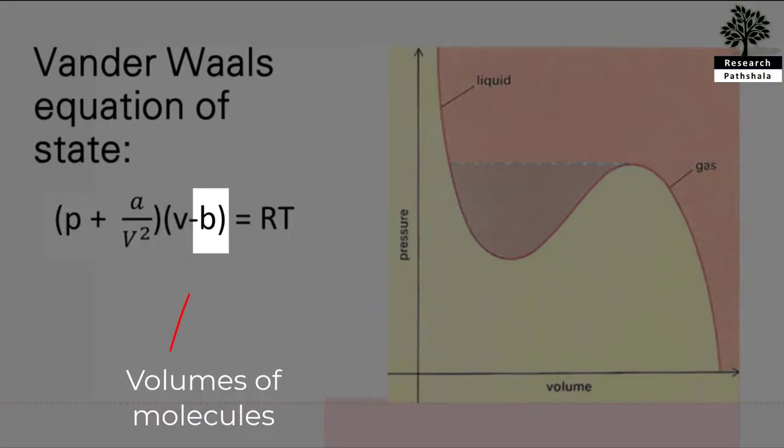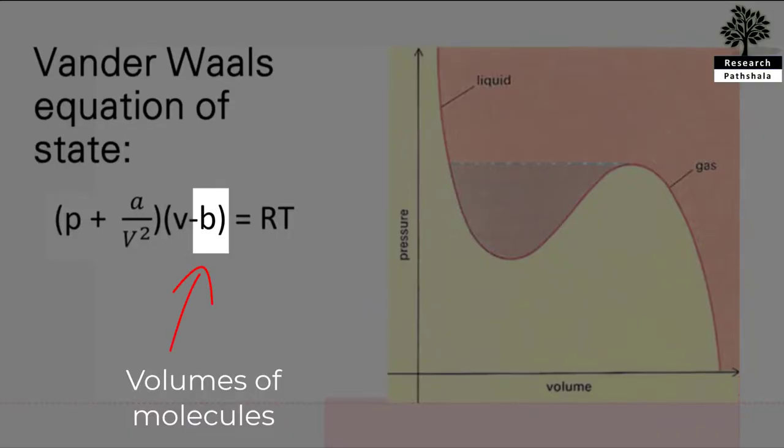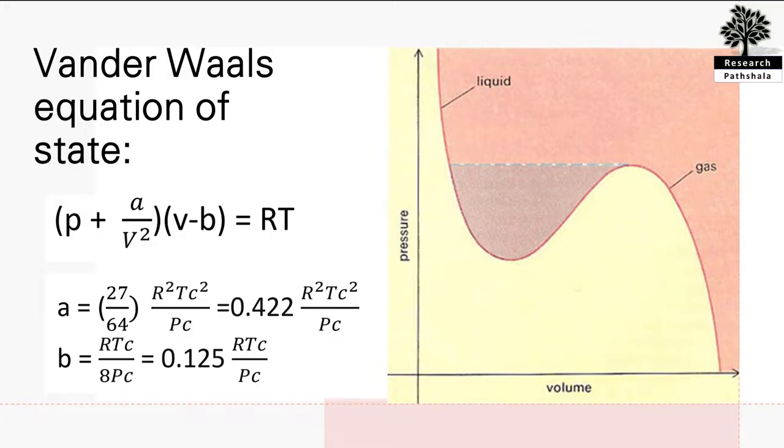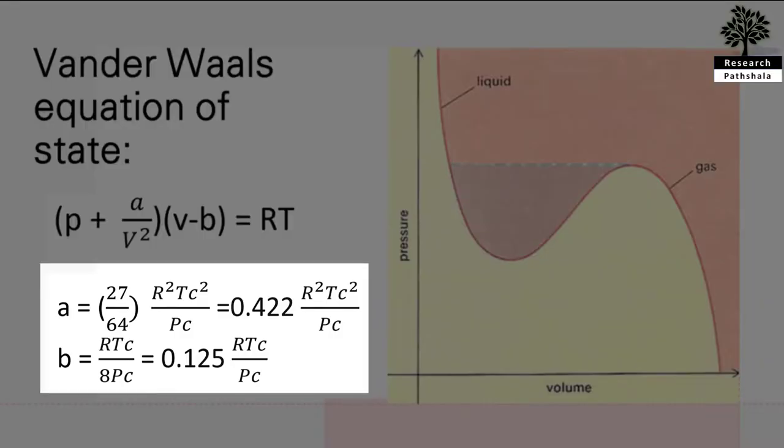The term b is incorporated to account for the volume of the molecules—that is, the volume occupied by gas molecules—and is called the co-volume. The values of a in terms of critical pressure and temperature are given as follows.